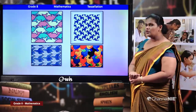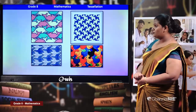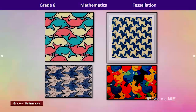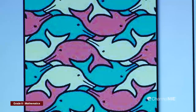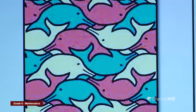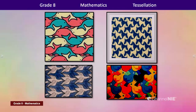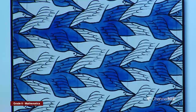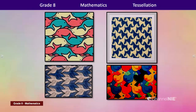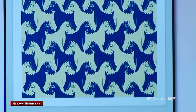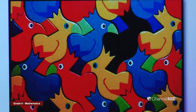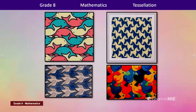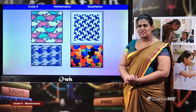Here also: the first looks like a whale — the same whale throughout in different colors. The second looks like birds — the same bird in two different colors. The next looks like a dog — the same dog figure in two different colors. And here a bird figure is used throughout in different colors. All are pure tessellations.